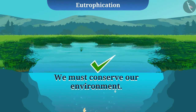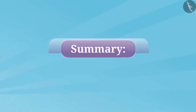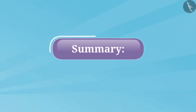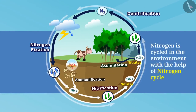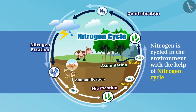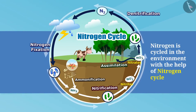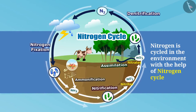We must take preventive measures to avoid such conditions and conserve our environment. So friends, what did we learn today? Nitrogen is cycled in the environment with the help of the nitrogen cycle. Various stages of the nitrogen cycle include nitrogen fixation, nitrification, assimilation, ammonification, and denitrification. And we also talked about eutrophication.